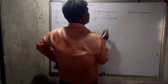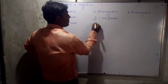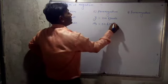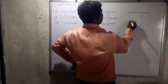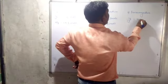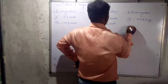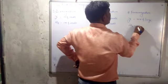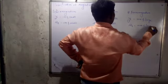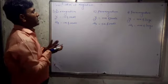In Ferromagnetism, magnetic susceptibility is positive and large. This is the difference between Diamagnetism, Paramagnetism, and Ferromagnetism.